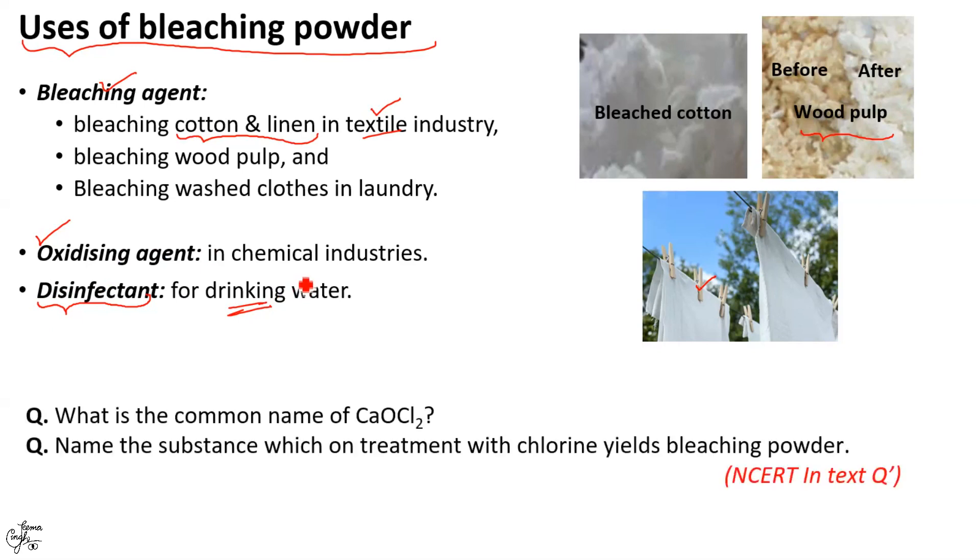I am sure you will be able to answer these simple NCERT questions correctly. What is the common name of calcium oxychloride? Bleaching powder. Name the substance which on treatment with chlorine yields bleaching powder. So, the substance is calcium hydroxide or slaked lime with formula Ca(OH)2.